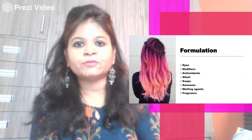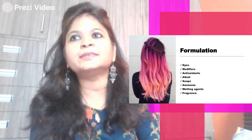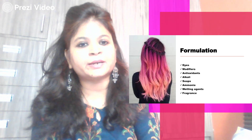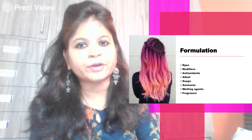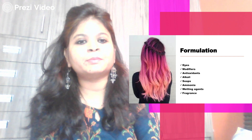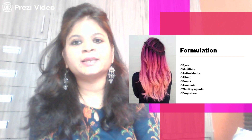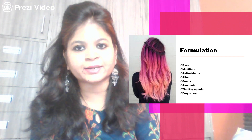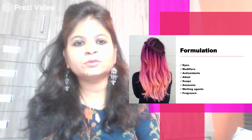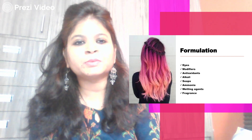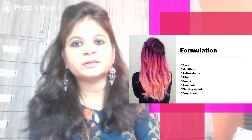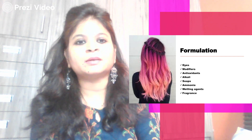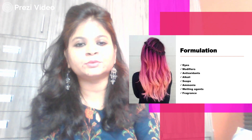Regarding the formulation and composition of these dyes — nowadays dyes are composed of a large number of chemicals: dyes as the main color-imparting substance, modifiers, antioxidants, alkalis, soaps, ammonia, wetting agents, and fragrances. For permanent hair dyes, the composition is more complex as a chemical reaction needs to take place to ensure the desired color is achieved.